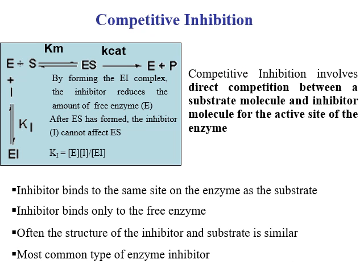Let's look at competitive inhibition. In normal enzyme catalysis without inhibitor, there is no competition. But when it comes to competitive inhibition, the inhibitor directly competes with and binds to the free enzyme. Competitive inhibition involves direct competition between the substrate molecule and the inhibitor molecule for the active site of the enzyme.